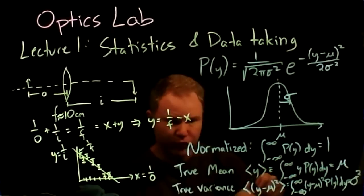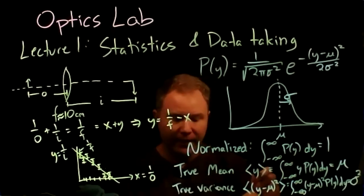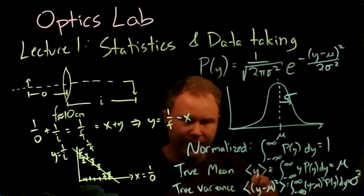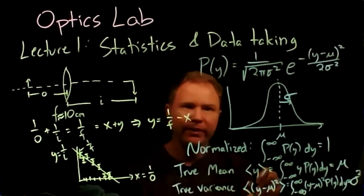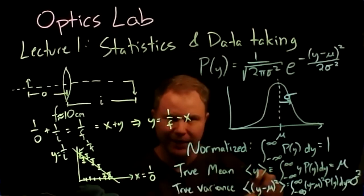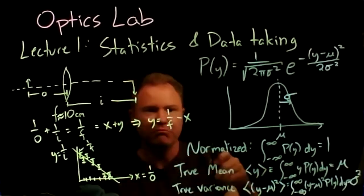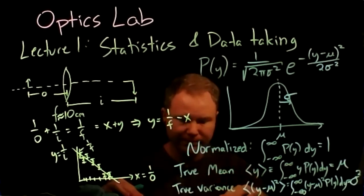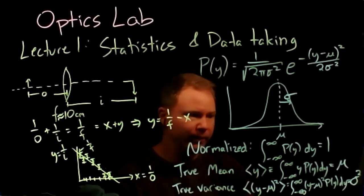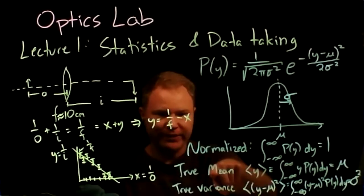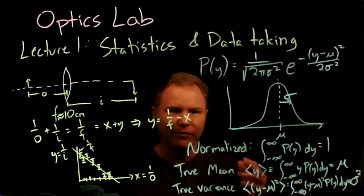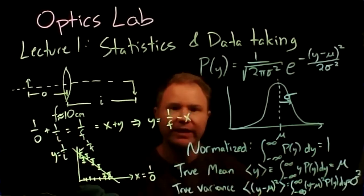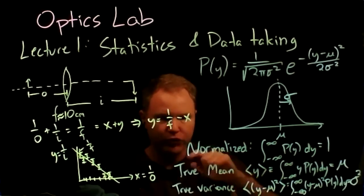These true mean and true variance are to be distinguished from the means and variances you form from the fact that you're not going to do this experiment an infinite number of times — you're going to do each point roughly five times. Five is a reasonable number to repeat each measurement in Optics Lab. One of the things most confusing in this first section is that there are going to be a bunch of mean-like and variance-like quantities, and keeping them all straight is the hardest thing.